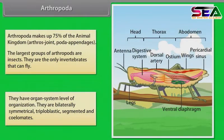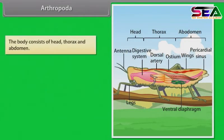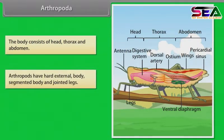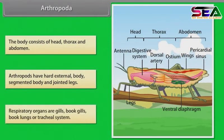Arthropods are bilaterally symmetrical, triploblastic, segmented and coelomate animals. The body consists of head, thorax and abdomen. They have a hard exoskeleton, segmented body and jointed legs. Respiratory organs include gills, book gills, book lungs or a tracheal system.